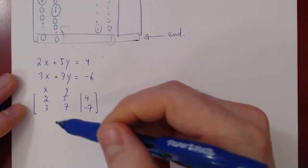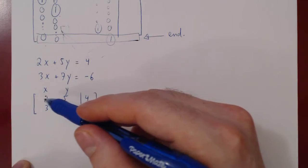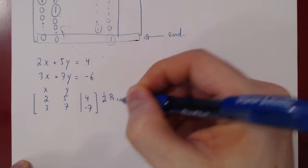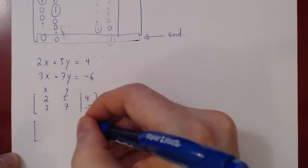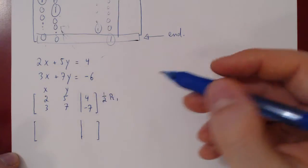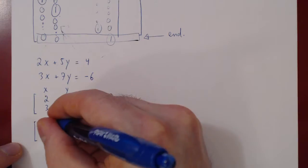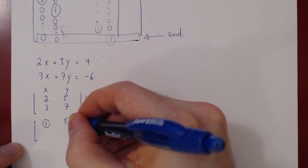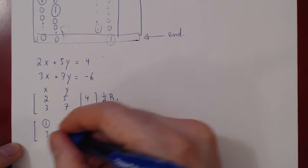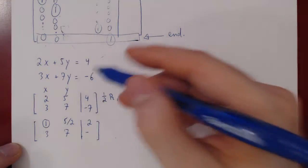Starting with the leftmost column, we're trying to get a leading 1 in the top row. This can easily be done if we multiply row 1 by 1/2. When we multiply a row by a real number, we multiply every entry by that number: 1/2 times 2 is 1 — this is now a leading 1. 1/2 times 5 is 5/2, and 1/2 times 4 is 2. We are not changing row 2, so we recopy it. The last entry is -6, not -7.